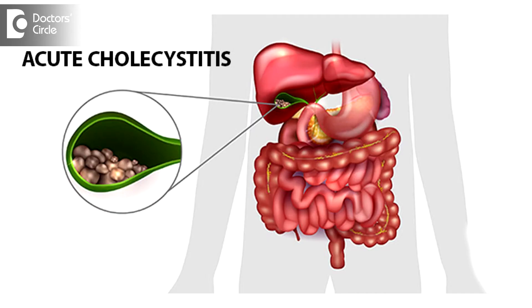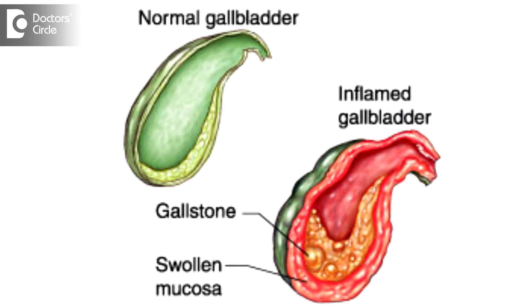The attack of gallbladder pain is called cholecystitis. Most often it is calculus cholecystitis — whenever there are stones in the gallbladder you have calculus cholecystitis. If there are no stones, we call it acalculous cholecystitis.